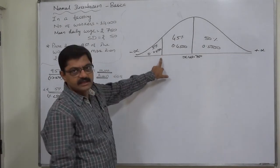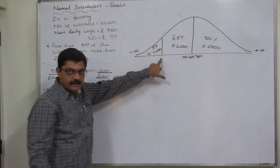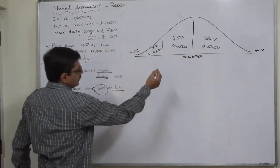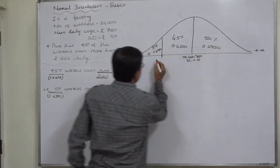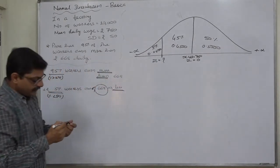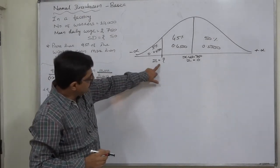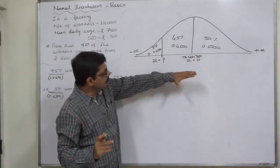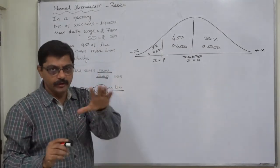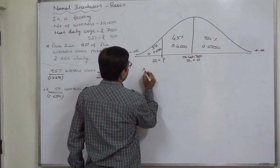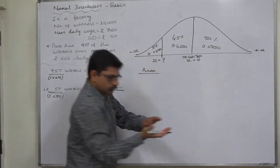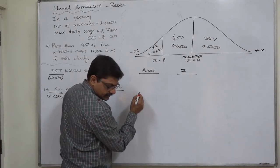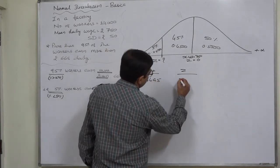To prove this, the value of X here must be 668 or approximately 668. We are going to find out the value of X for this particular point. The area between Z=0 and Z at this point is 0.45. Now if we refer to the readily available Z-table showing area under the normal curve, we have to find the value of Z on the basis of area.